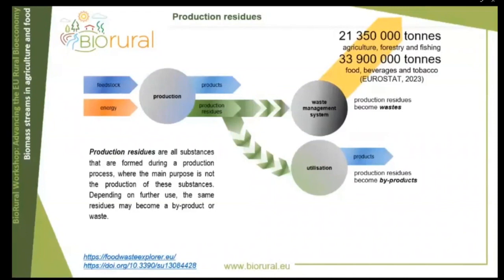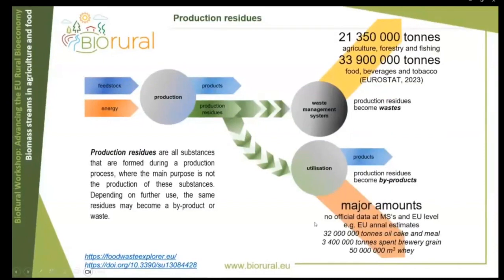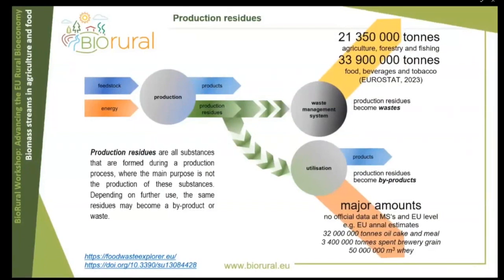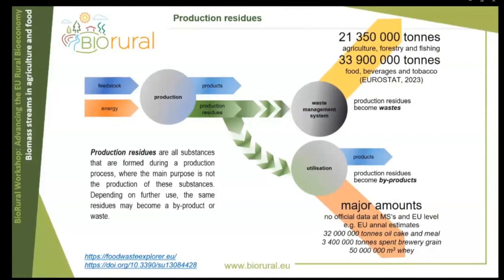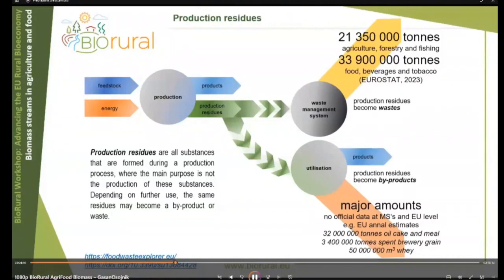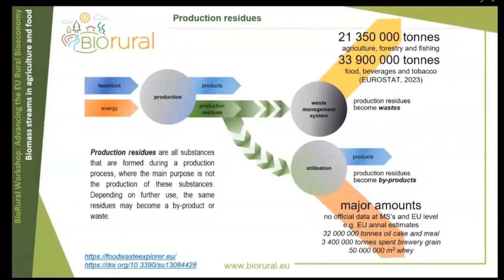If the same biomass or processing residues are not wasted but are used in some way — in the same production process, in another company, or by farmers for feed — then the same processing residue becomes a byproduct. Byproduct amounts are not well known, but crunching some numbers quickly, we can understand that the majority of underutilized food processing biomass is actually located in this category. For example, just three byproducts on the European level — from oil, beer, and cheese production — already meet the reported waste amount.